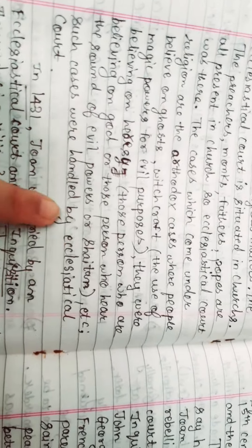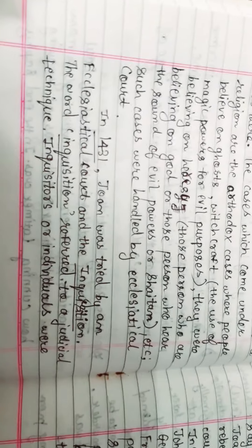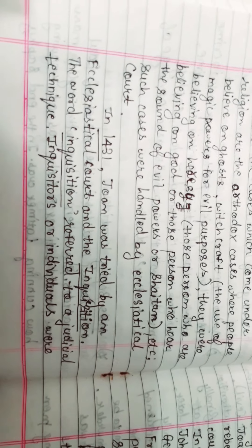Such cases were handled by ecclesiastical court. In 1431, John was tried by ecclesiastical court and the inquisition.